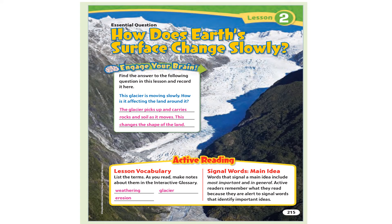Lesson 2. Essential question: How does Earth's surface change slowly? Engage your brain. Find the answer to the following question in this lesson and record it here. This glacier is moving slowly. How is it affecting the land around it?